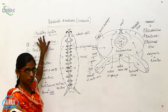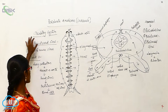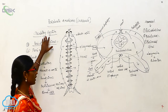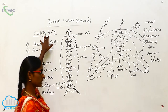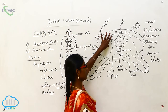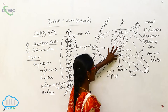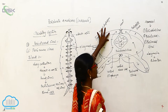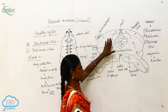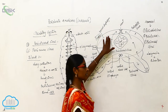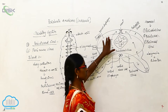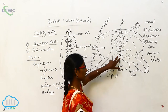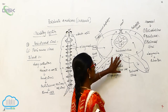The circulatory system consists of three components: the haemocoel, blood, and heart. The haemocoel divides into three regions — pericardial sinus, perivisceral sinus, and perineural sinus. The pericardial sinus contains the 13-chambered heart; the perivisceral sinus contains all the visceral organs; and the perineural sinus contains the nerve cord.